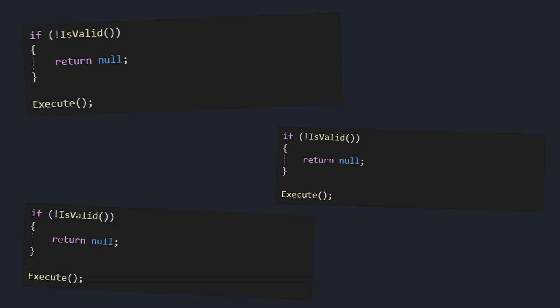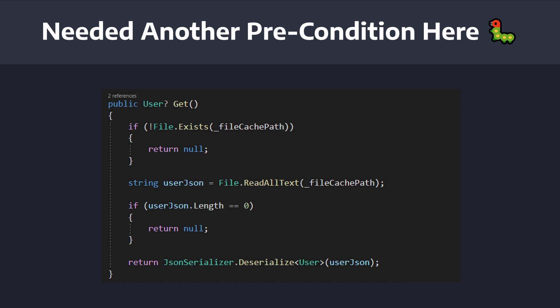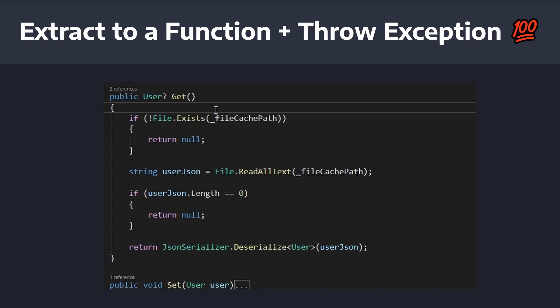Do you find yourself duplicating preconditions or guard clauses across multiple functions? The other day I was faced with this situation when I was attempting to fix a bug that required me to add a precondition, or a guard clause, to the beginning of every single function in a class that I was working with.